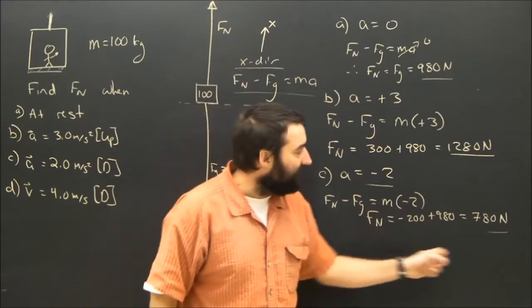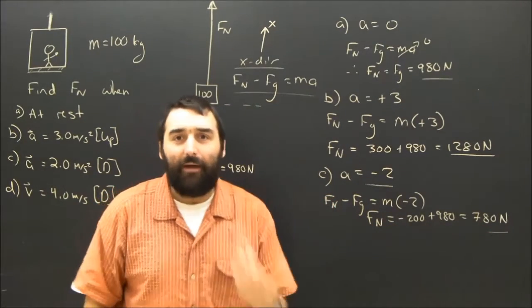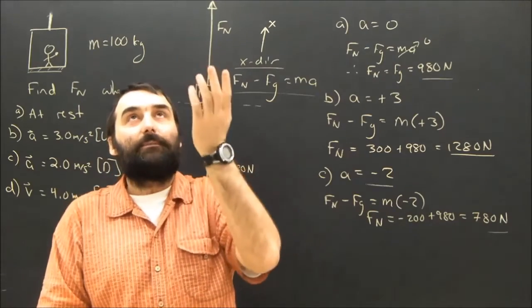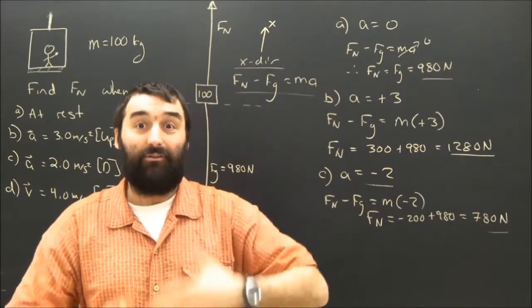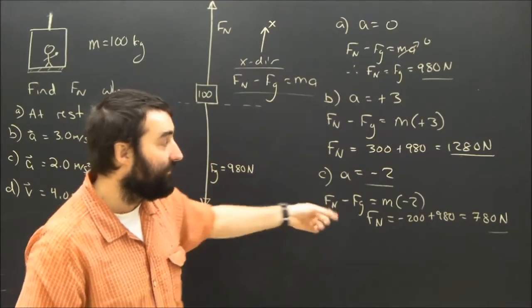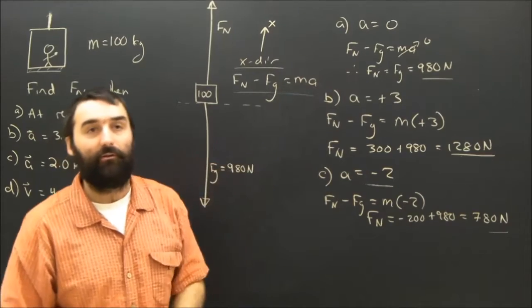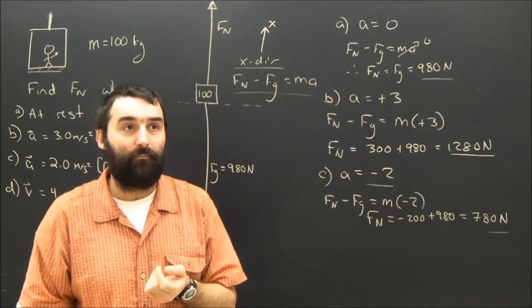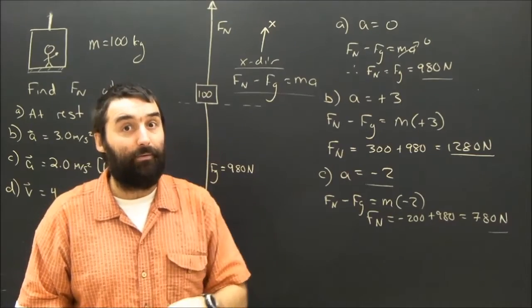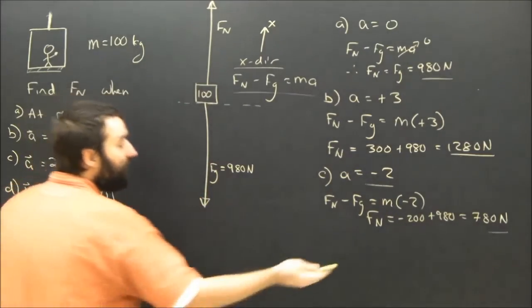When the elevator accelerates down, the normal force is less than gravity. And that makes sense, right? The normal force isn't pushing up as hard as gravity, so the earth is pulling you in your elevator down, or at least accelerating you in your elevator down. Again, of course, the elevator could still be going up and slowing. When you're in an elevator, you feel kind of light when it stops on the way up. Also, when it speeds up on the way down, you feel a little bit lighter than normal. So that makes sense.